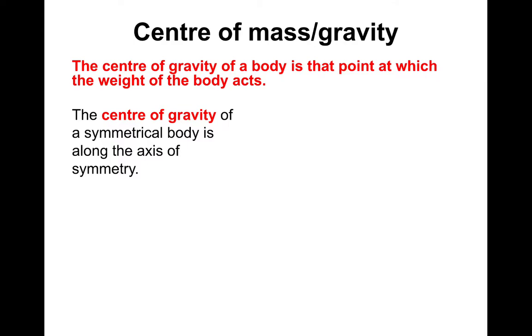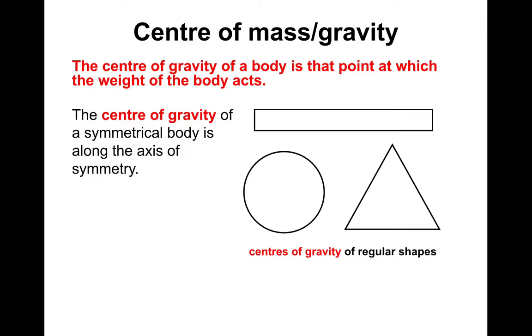So the centre of gravity of a symmetrical body is along the axis of symmetry and here's some examples. Centres of gravity are regular shapes. As you can see the dotted lines, the dashed lines are the lines of symmetry and the centre of gravity or centre of mass resides in the centre. That's if the body is symmetrical and uniform. By uniform that means it has like an average mass as you move from one side to the other. So maybe like a beam of wood will be a constant mass as you move across it.